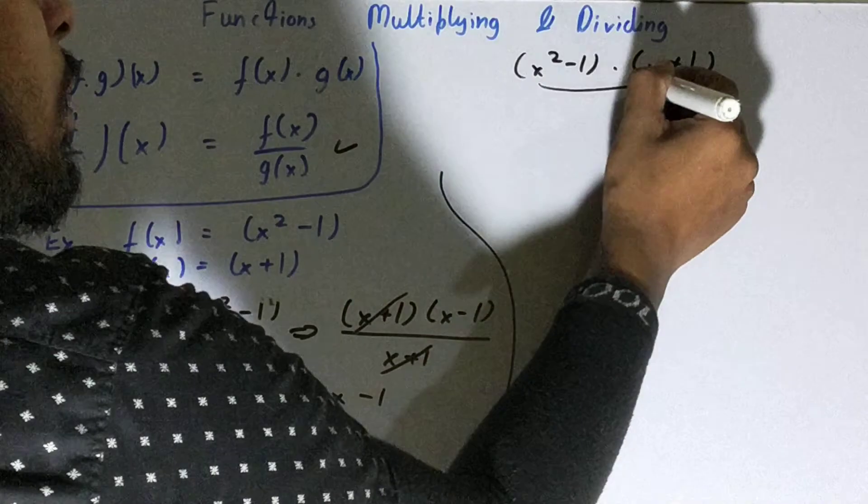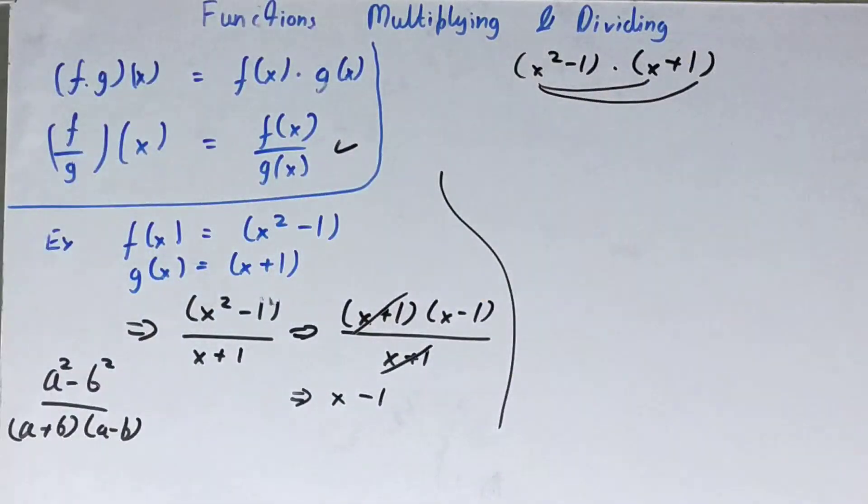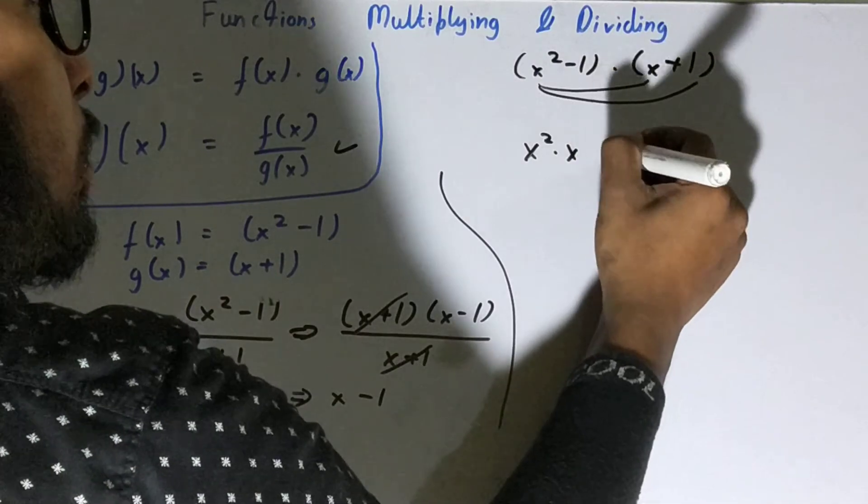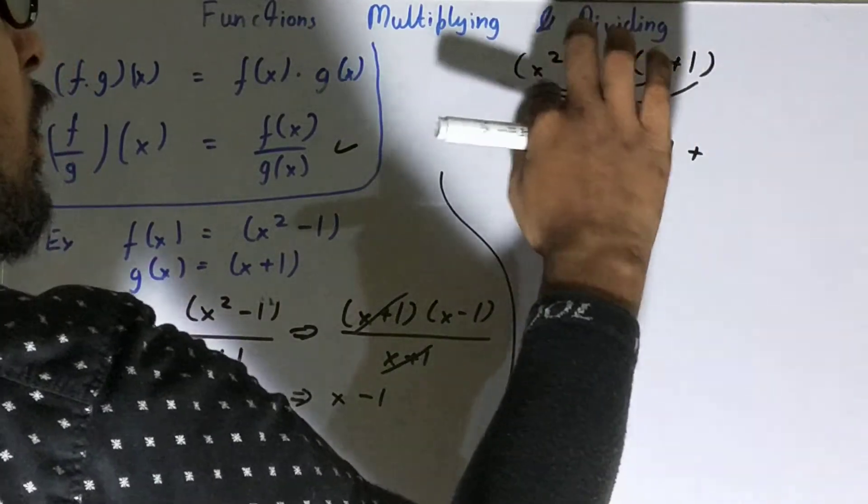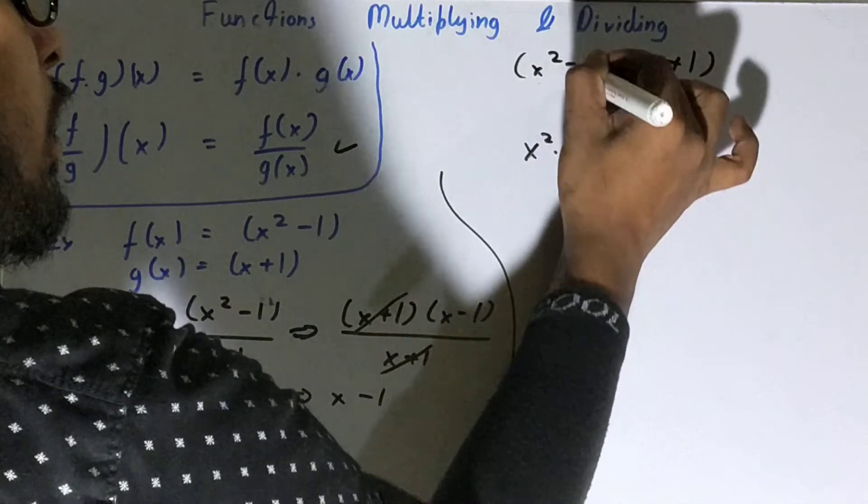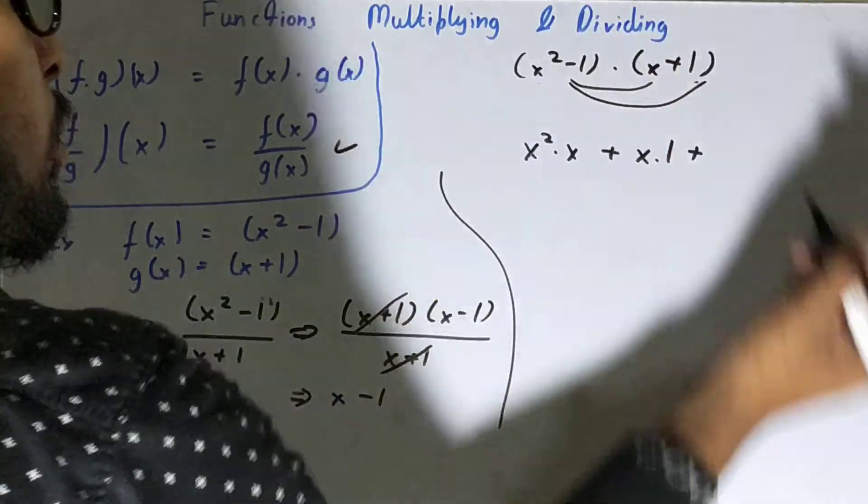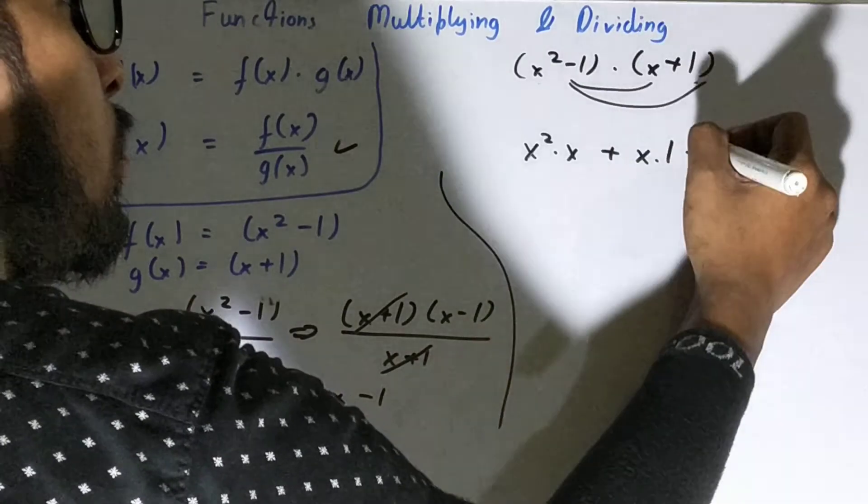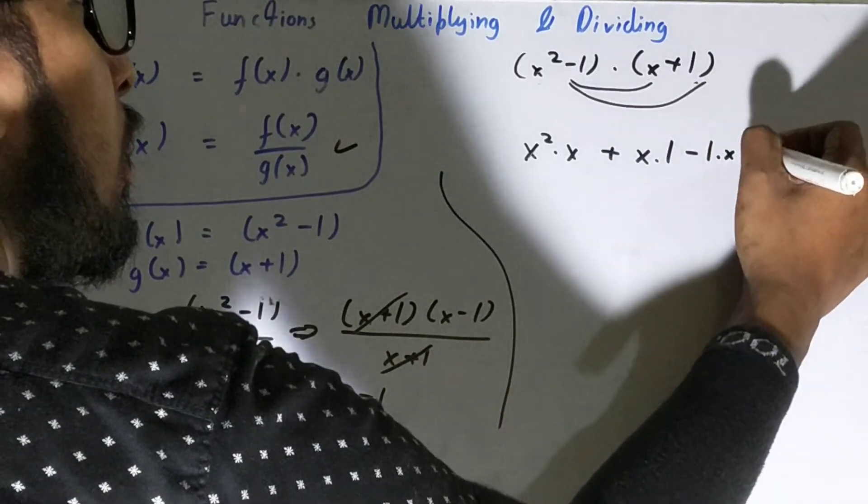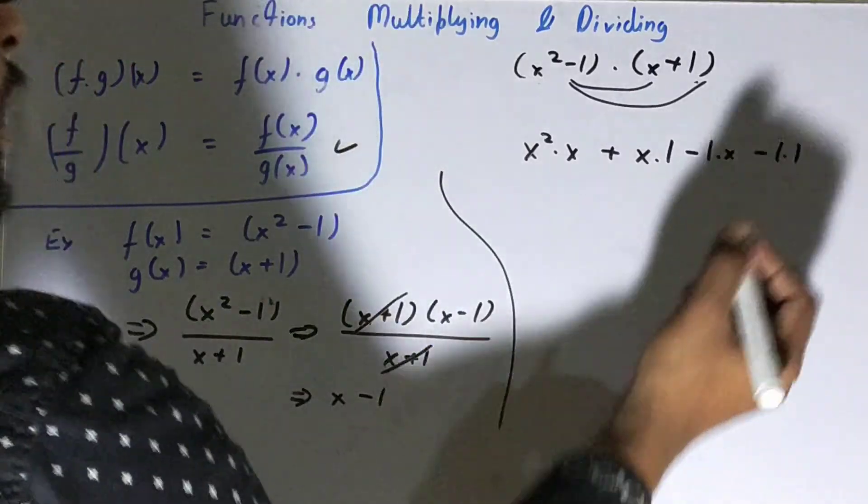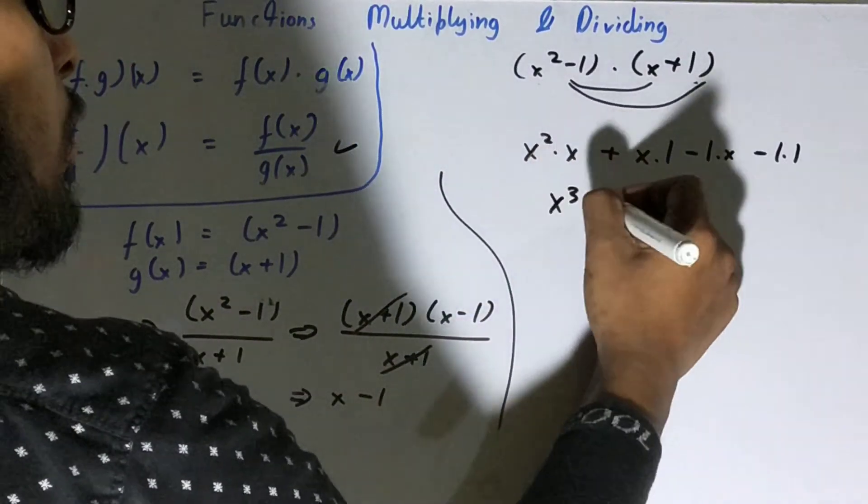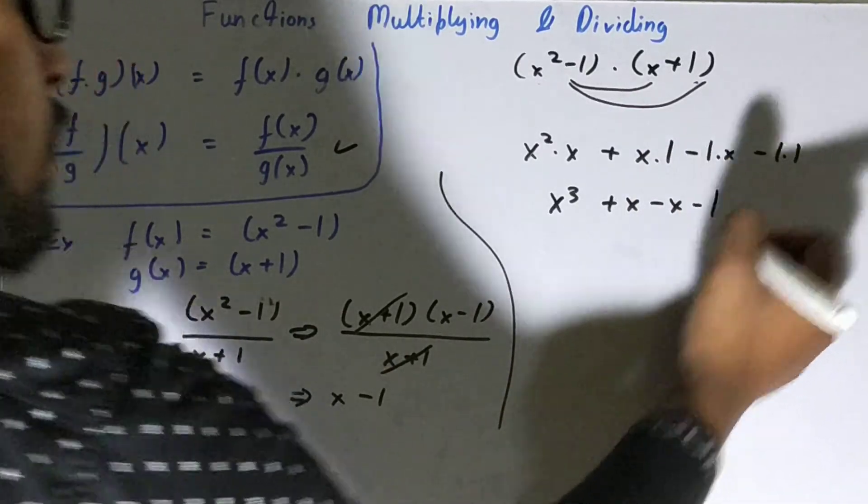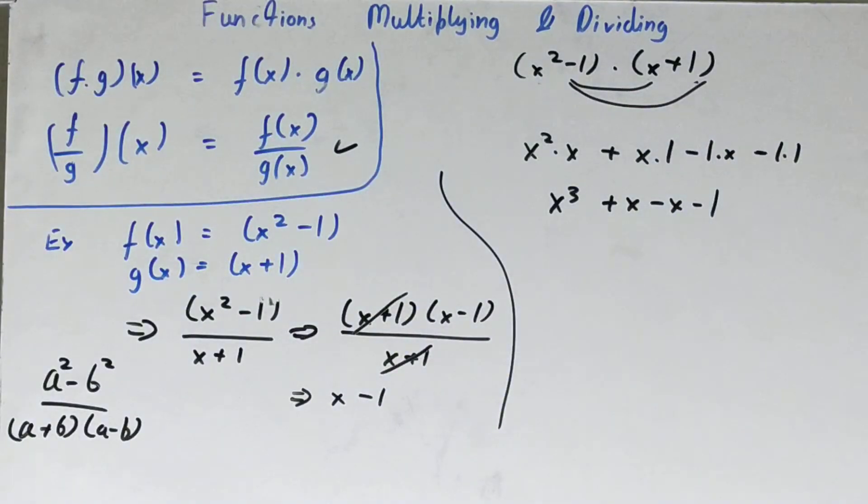So it will be x squared dot x plus x squared dot one, plus then the other term will be multiplied with both the terms one by one. So it will be minus one dot x minus one dot one. All right, so it will be x cube, it will be x, it will be minus x, and it will be minus one. Can you simplify it further on?